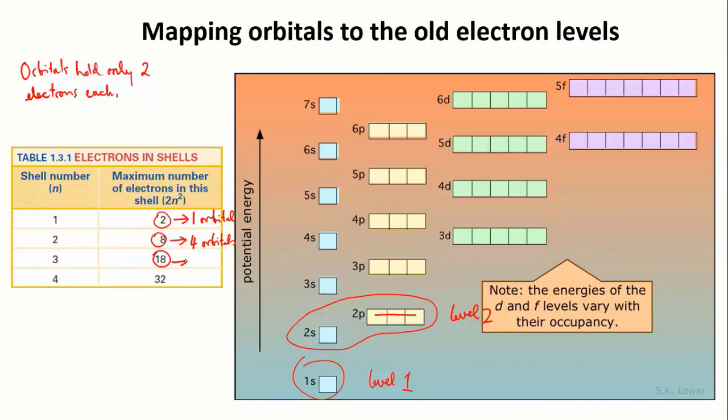Level 3 is able to hold 18 electrons, so it must be made up of nine orbitals. They are the 3s orbital, three 3p orbitals, which are slightly higher in energy, and five 3d orbitals, which are higher in energy again.